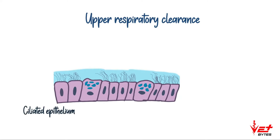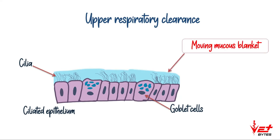First, we'll see about upper respiratory clearance. The upper respiratory tract is lined by ciliated epithelium, where the epithelial surface has finger-like projections called cilia. There are certain cells called goblet cells which are responsible for the production of mucus. The epithelium is covered by a layer called the moving mucus blanket, which is made up of mucus and alveolar fluid.